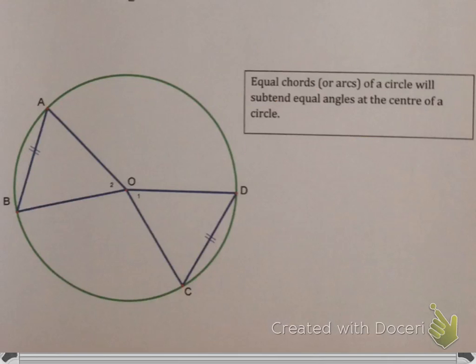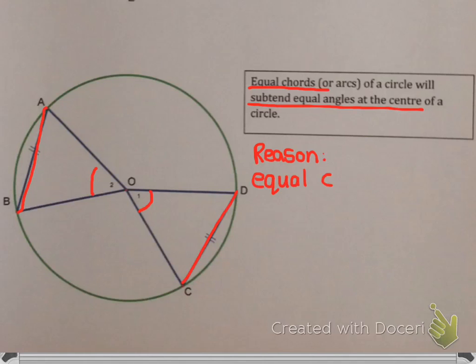Our next corollary is fairly similar. It says if you have equal chords, then they will subtend equal angles at the center. So it's fairly similar to the last one. Our reason is exactly the same: equal chords subtend equal angles, but at this time it says at center.